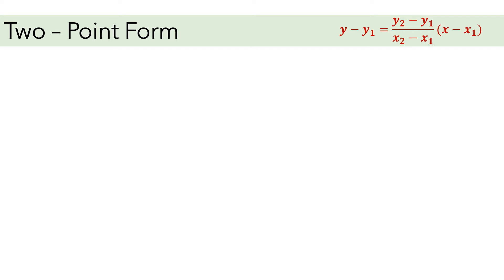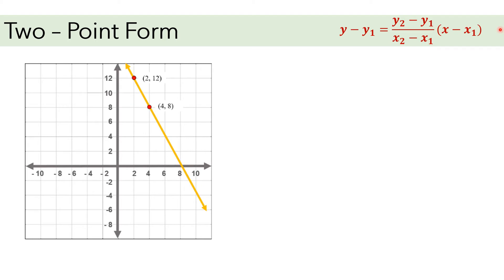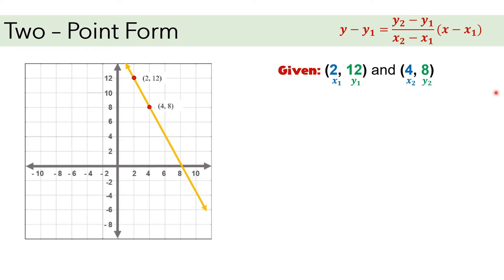Now let us have an example. A line is graphed, and we can see two points on this line: (2, 12) and (4, 8). To construct the equation of this line given these two points, we will use this two-point form. But before we substitute, let us assign x sub 1, y sub 1 to the first given point, and x sub 2, y sub 2 to the second given point. After that, we may substitute.